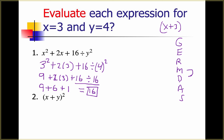The next expression is x plus y in parentheses, raised to the second power. We substitute in again — show your substitutions. We use GERMDOS: first we take 3 plus 4 because we're doing a grouping symbol, and we get 7. Then 7 squared gives us 49. We did our grouping symbol first, then the exponent. This gives you an idea how to put values in, do your grouping symbols first, then exponents and radicals, then multiply and divide, then add and subtract.